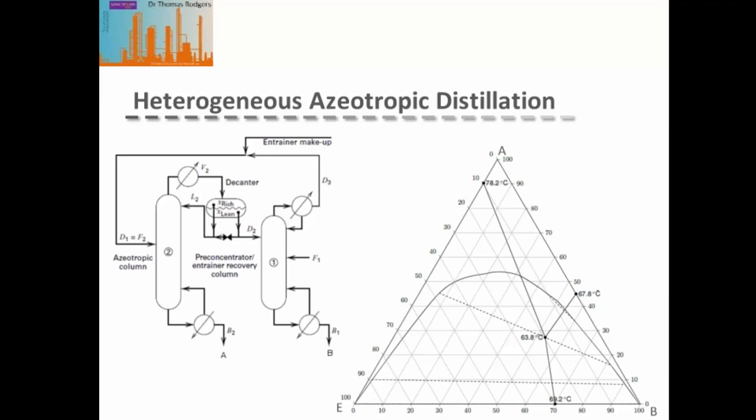On the right hand side we have our ternary diagram that shows both our distillation regions and our liquid-liquid two-phase region. The distillation regions are given by the straight black lines joined by the points with temperatures, and these points are the azeotropes with their temperatures.